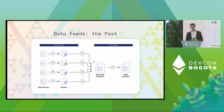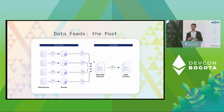For data feeds, the typical aggregation for numerical data is to take the median, because that's a robust statistic that doesn't respond to false outlier values or things like that. Once we have medianized our value, we can expose it to the DApp contract downstream. This is nice because we can now handle subsets of oracles being faulty.